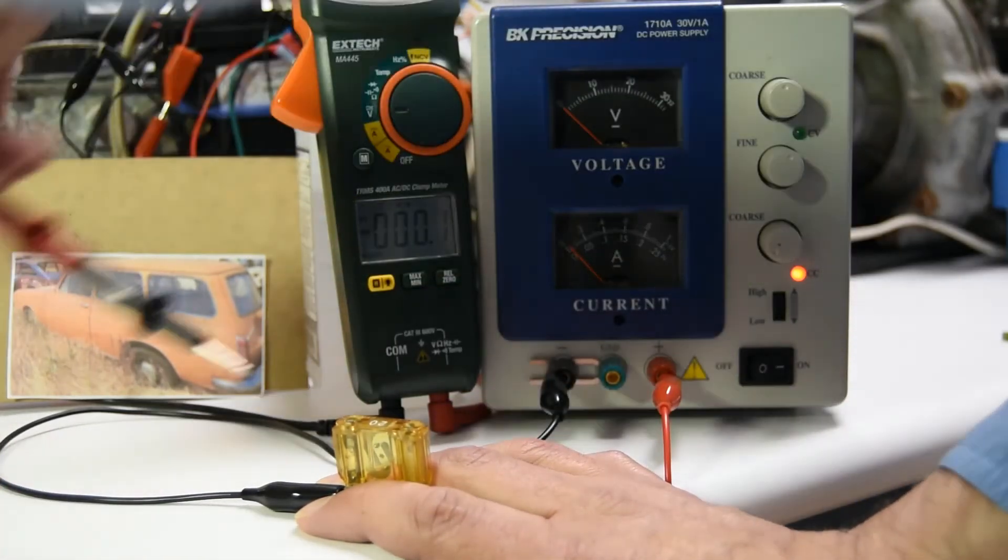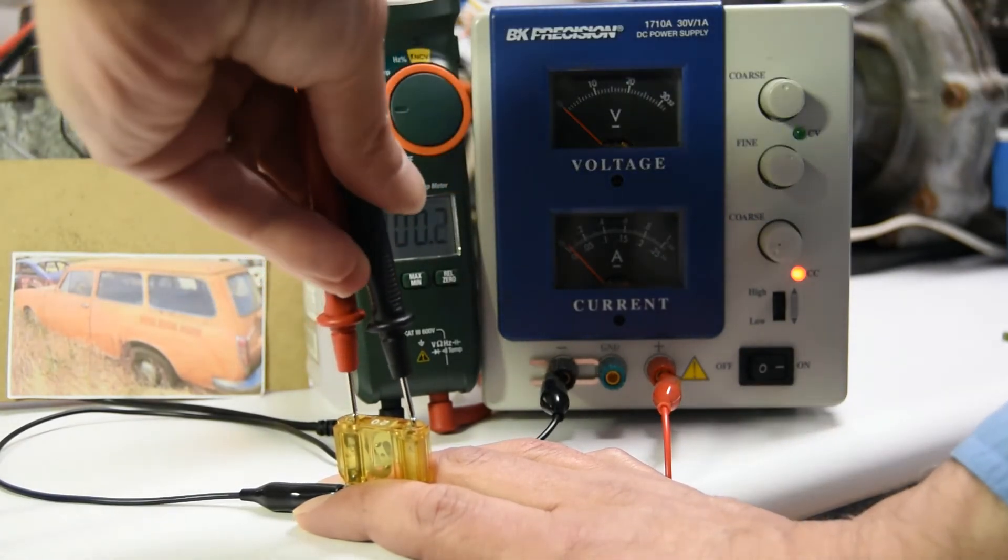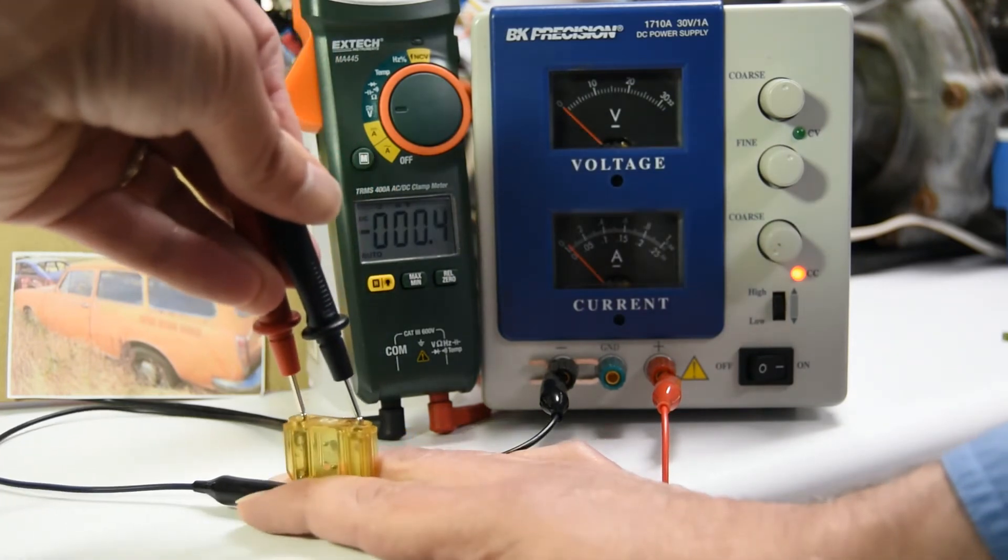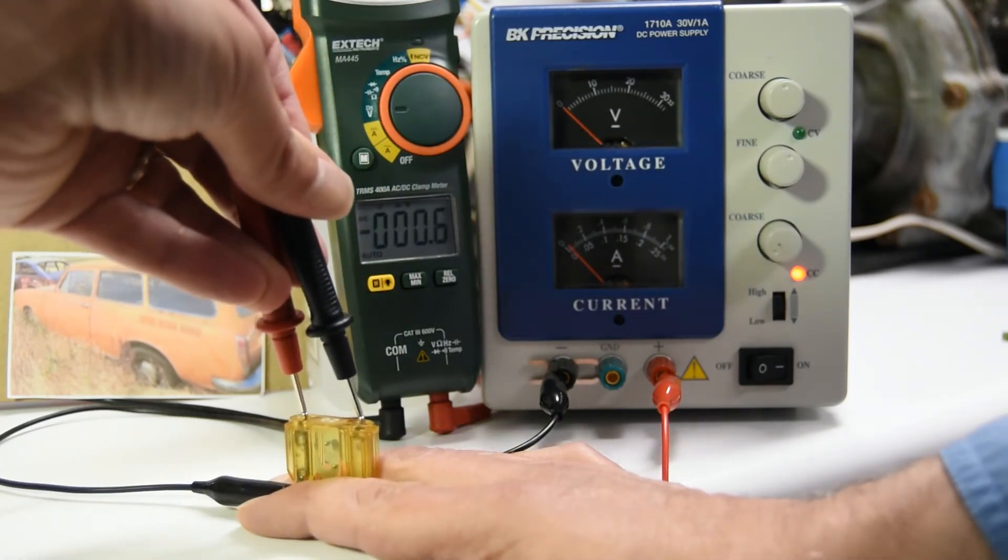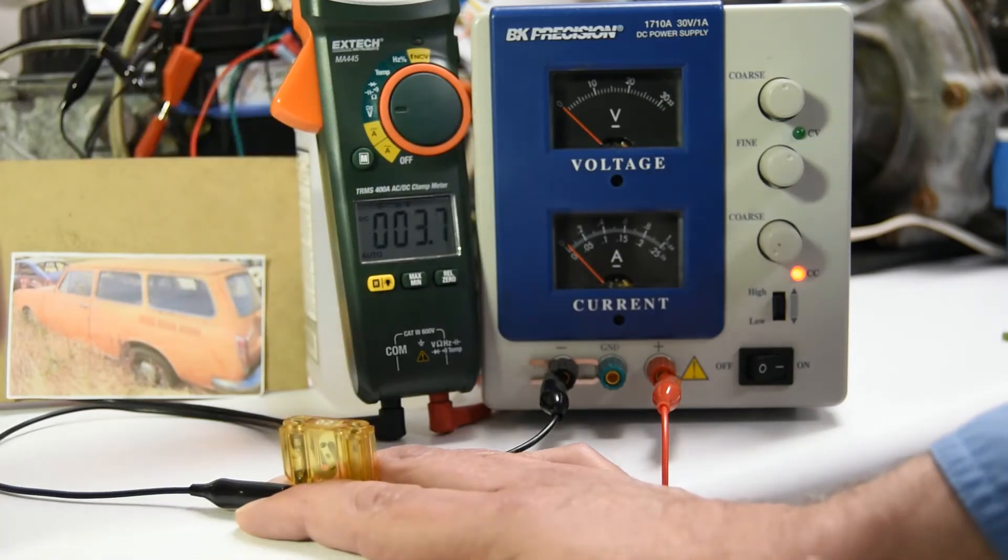So I'll do the first measurement and say, okay, on this measurement, if you read the meter, it says minus 0.06 volts.